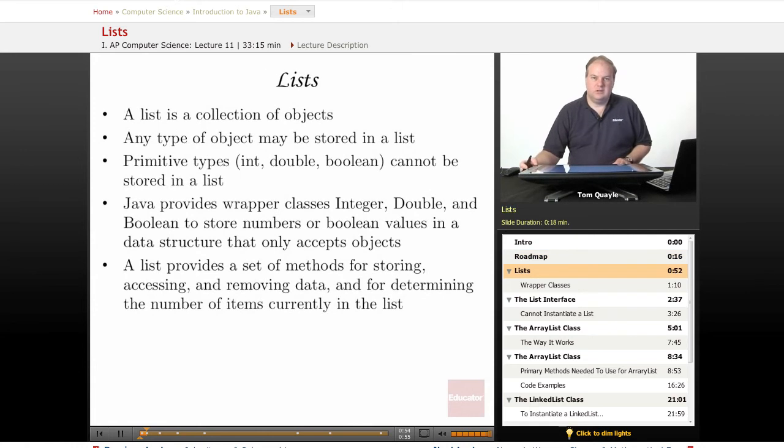A list is simply a collection of objects. Any type of object can be stored in a list. However, primitive types, such as int, boolean, and double, are not objects, and therefore they cannot be stored in a list.